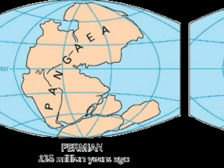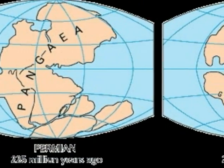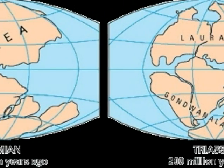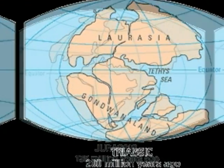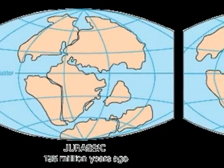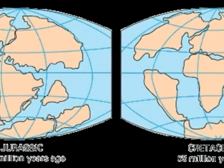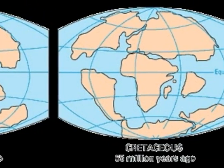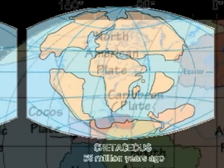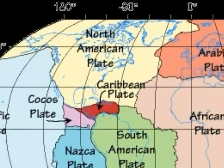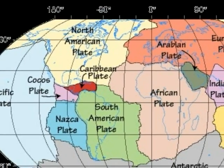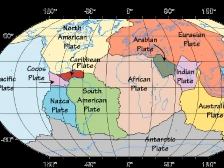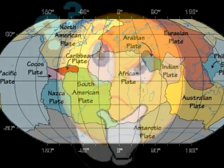Day after day the earth evolves. There are two theories which help explain continent drift and plate tectonics. What do they mean? Oh, let me explain.